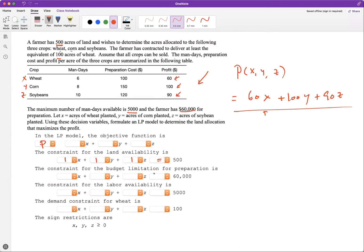And the constraint on the budget limitation for preparation: he has this much. That's given by the cost where we have to put all of them together. The cost is 100 for X, 150 for Y, and 120 for Z. And this has to be less than or equal to this amount.